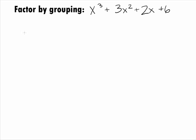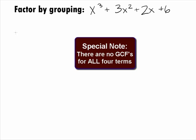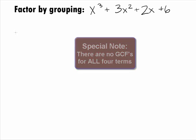In this example, we want to factor the polynomial x cubed plus 3x squared plus 2x plus 6 by grouping. Note that there are no Greatest Common Factors, or GCF, that we can factor out of all terms, so we will go right into factoring by grouping.